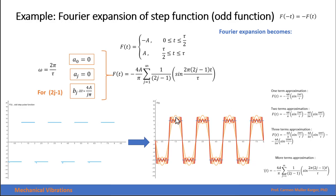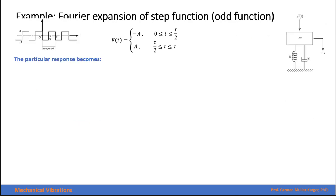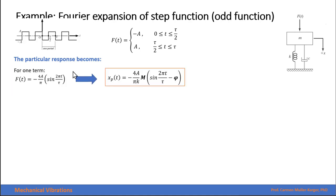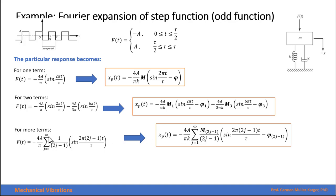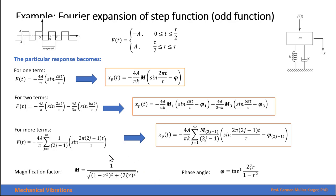With one term, two terms, three terms, or several terms, you can see the progressive improvement. When we have an odd function approximated as a sum of sine forces, the response with one term is a single solution. With two terms, we add two solutions together, and with several terms we obtain a summation of responses. The expressions for the magnification factor and phase angle are the same, and you must include the r corresponding to each j value.